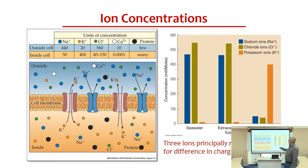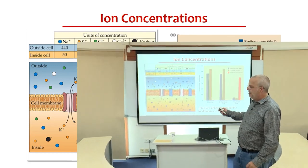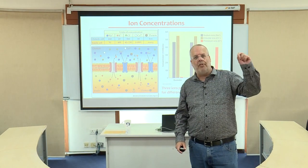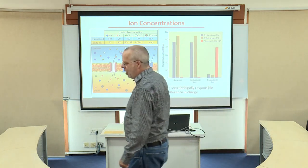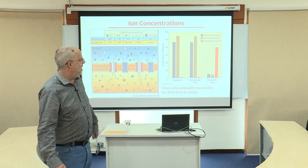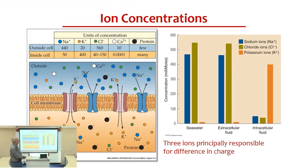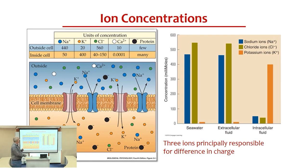Finally, we have chloride — Cl minus — a negatively charged ion. Outside 560, inside 150, so there's more chloride outside the cell than inside. We can graph this: intracellular — inside the neuron — shows high levels of potassium, low levels of sodium and chloride. In the extracellular space between the neurons, we have low levels of potassium but high levels of sodium and chloride.